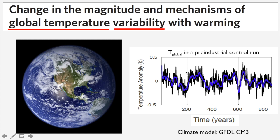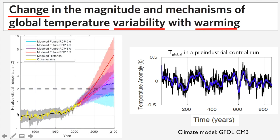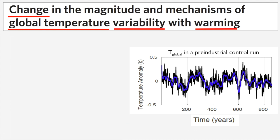We're interested in how this unforced variability might change with warming — as we warm from the pre-industrial era into the future where much more warming is expected. This has implications for how relevant pre-industrial control runs are for understanding variability currently and into the future, or whether they only tell us about variability in the pre-industrial state.